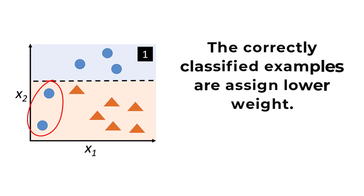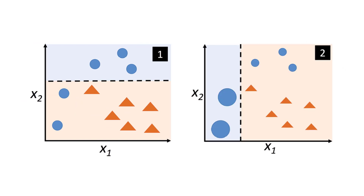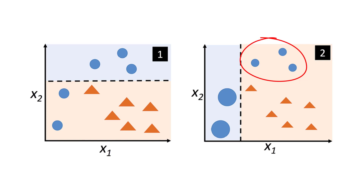Furthermore, the correctly classified examples are assigned lower weights. The next round will be more focused on the training examples that have the largest weights. Another model is trained and predictions are made on the dataset. This model tries to correct the errors from the previous model. The model misclassified three different examples from the cycle class. Similarly, each model corrects the errors of the previous model. The final model is the weighted mean of all the models.